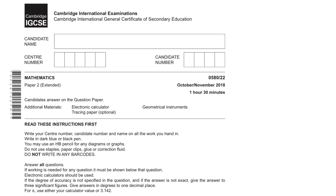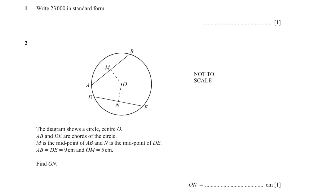Question 1: Write 23,000 in standard form. When writing in standard form, we need to have only one number before the decimal, so we write 2.3 — we don't write the zeros. Multiply by 10: how many more digits do we have? Four. So we raise 10 to the power of 4, giving 2.3 × 10⁴.